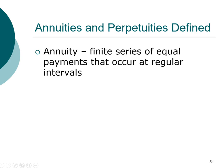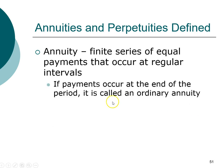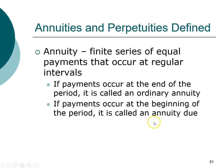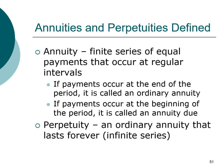Within annuities we can further classify into two types. If the payment occurs at the end of the period, it's called an ordinary annuity. If something is referred to simply as an annuity without the word 'ordinary,' you can assume it is an ordinary annuity. However, if cash flows occur at the beginning of each period, that is called an annuity due. Rent is often due at the beginning of the month, whereas your credit card payment is often due at the end.